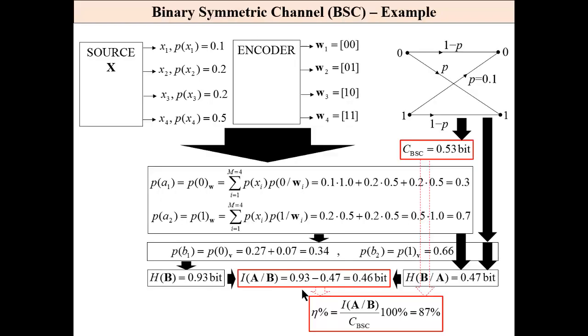This is an exemplary source. An exemplary channel. Bit error probability 0.1. The probability assignment of input source is here. These are codewords. For these probabilities, this is the optimum code. And the length of codeword is 2. And we may easily calculate. The capacity of the channel, of this channel, is 0.53 bit. The mutual information, taking into account these probabilities, input probabilities, is 0.46. What it means that the rate of channel utilization is high, is 87% for this data. That way, I have completed different screencasts regarding the theory of information.